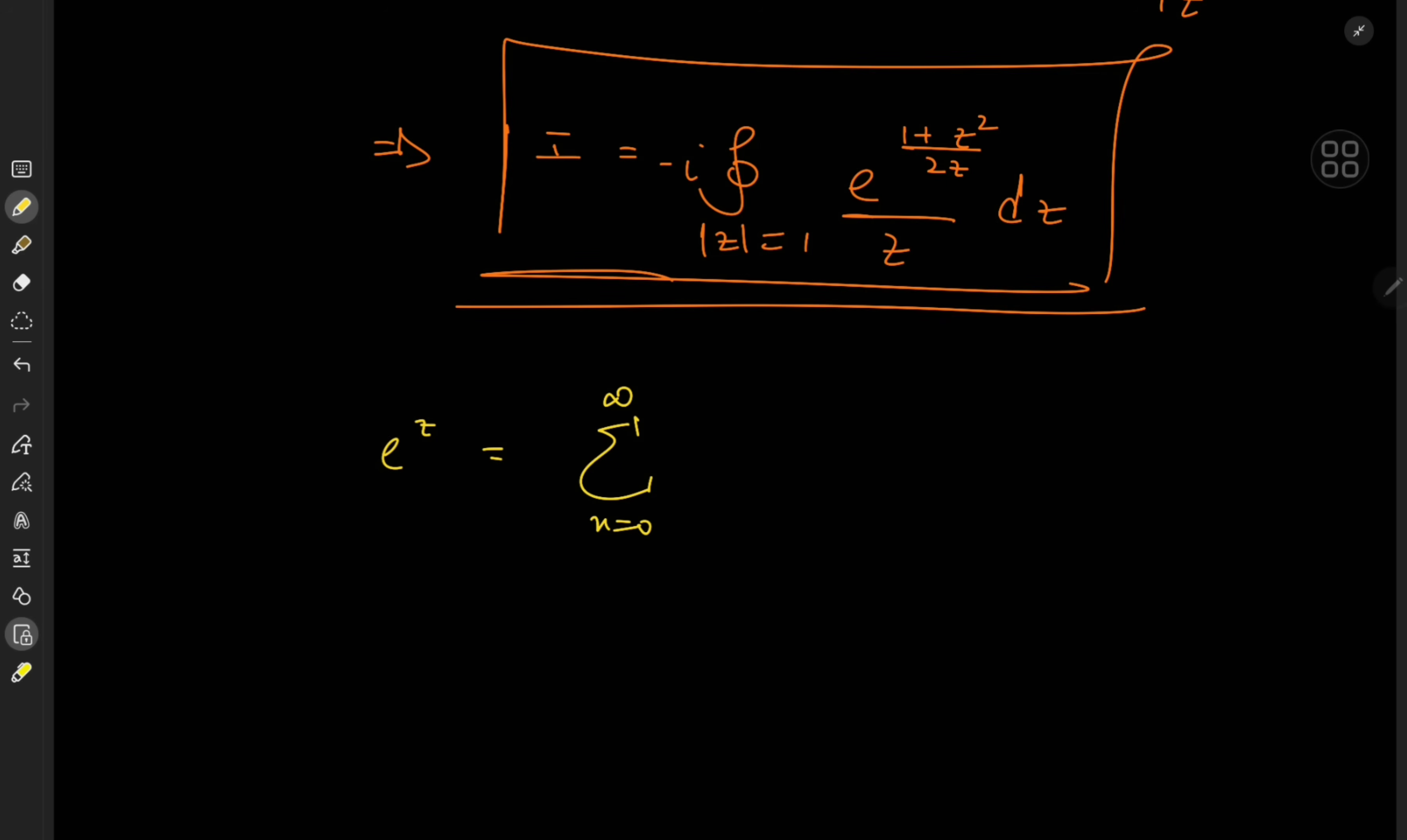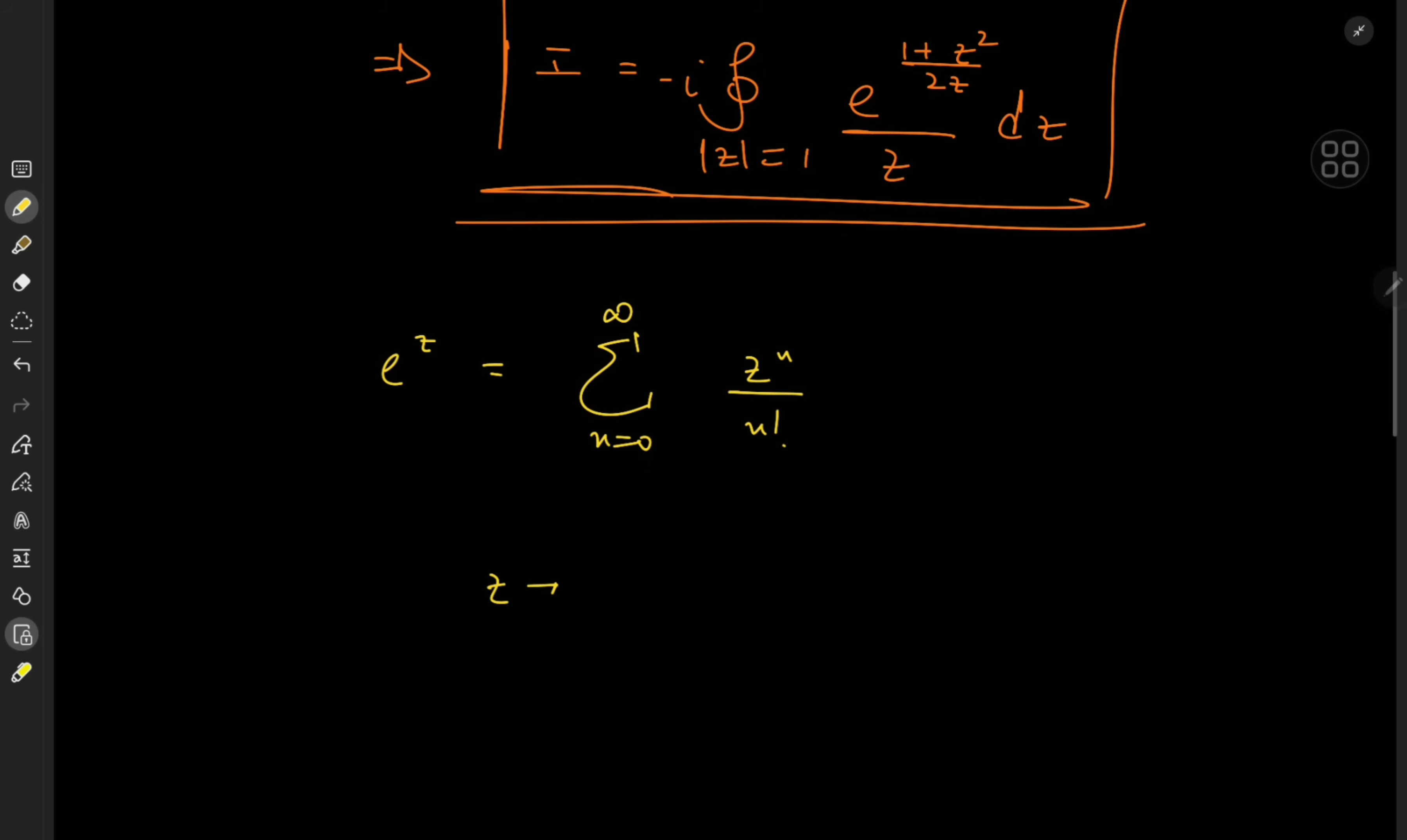So we have the sum over n from 0 to infinity of what exactly? Oh yeah, z^n over n factorial. Now our z here is being replaced by (1 + z²)/(2z), which we can write out as 1/(2z) + z/2.